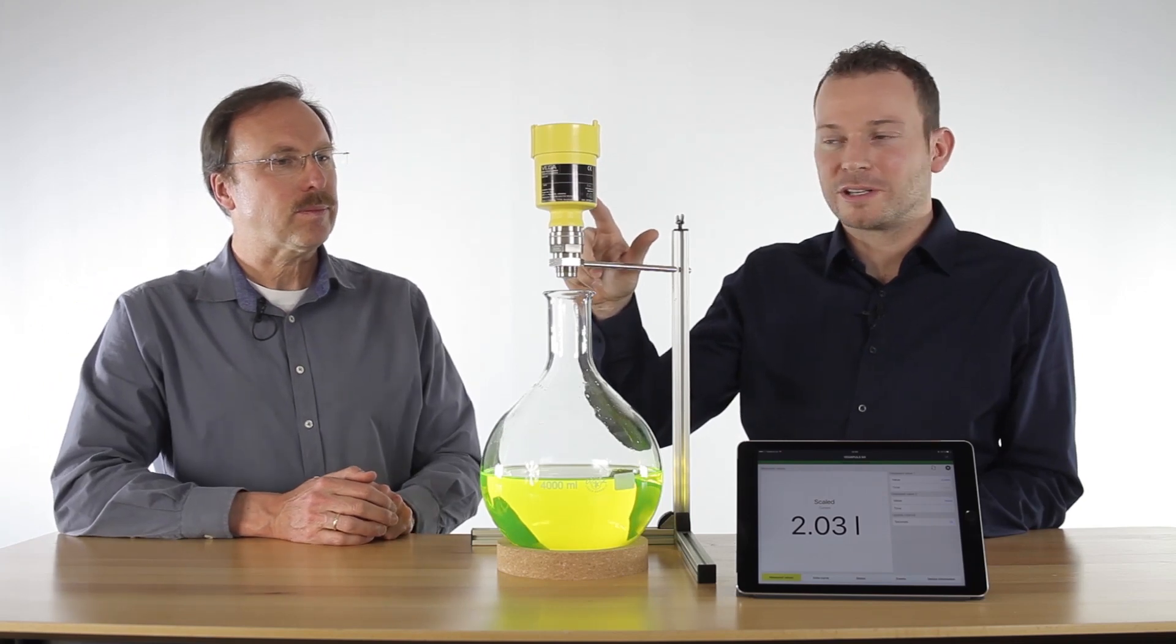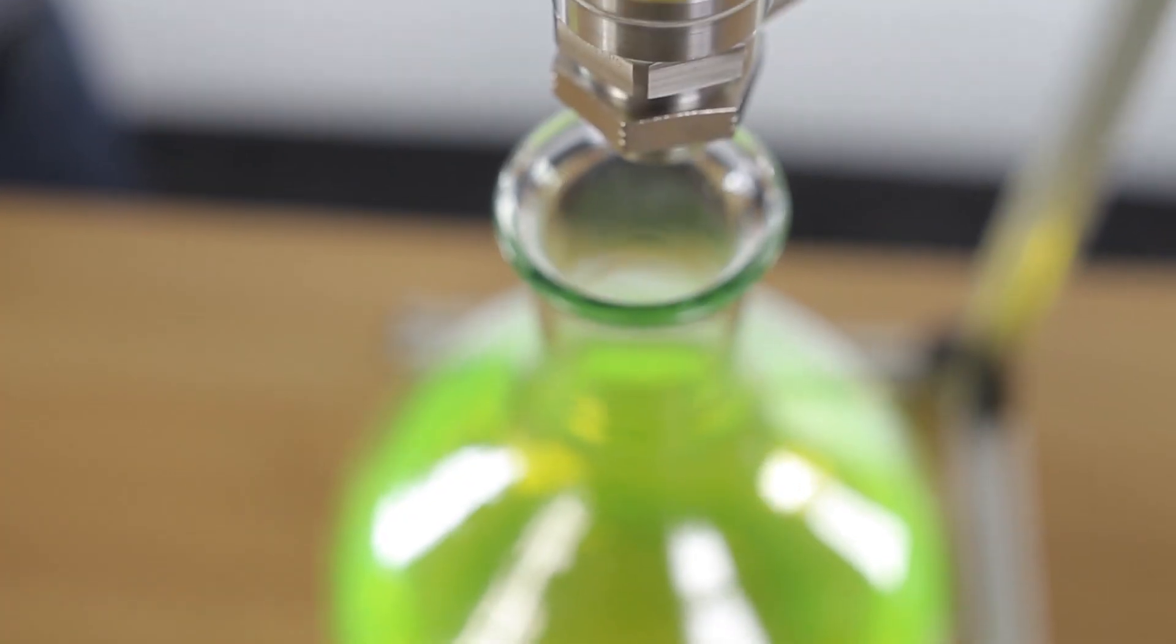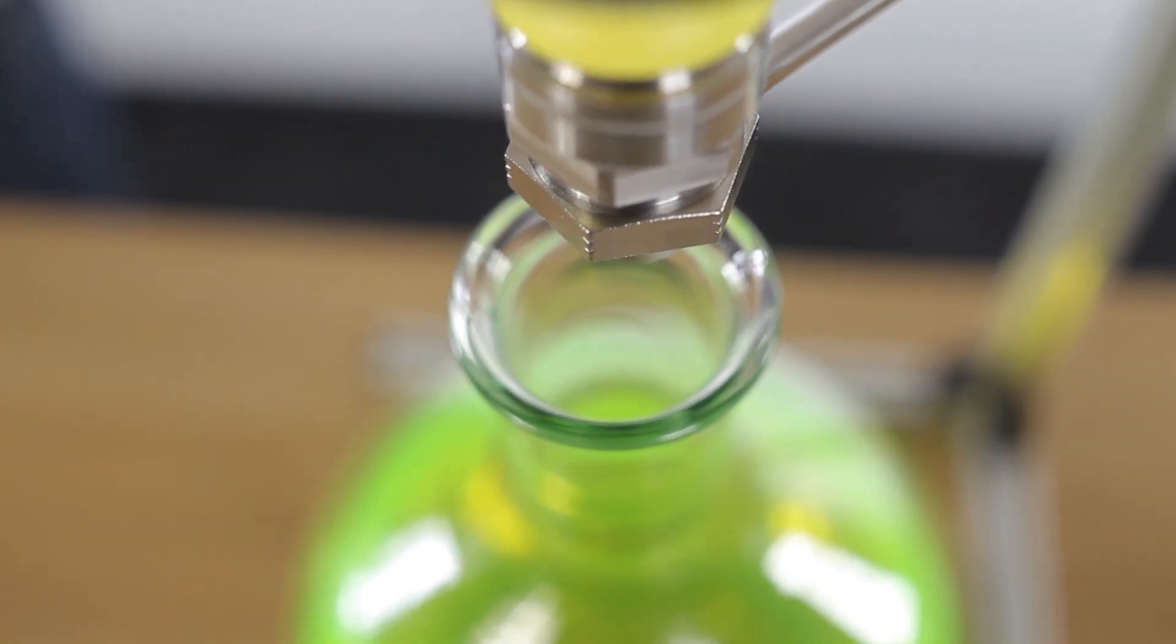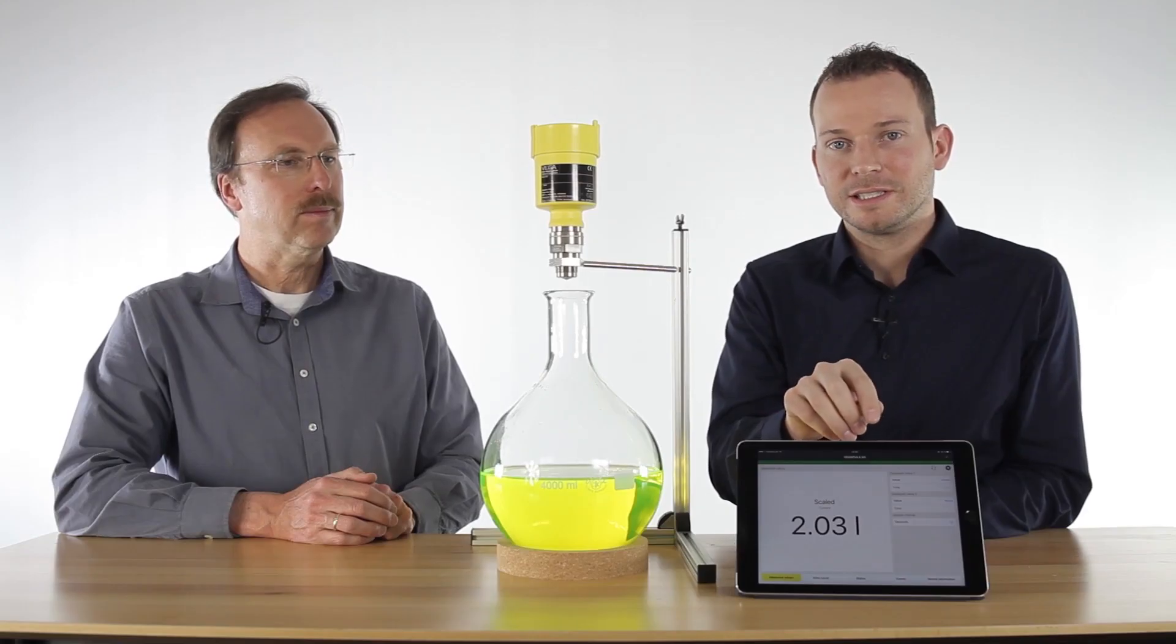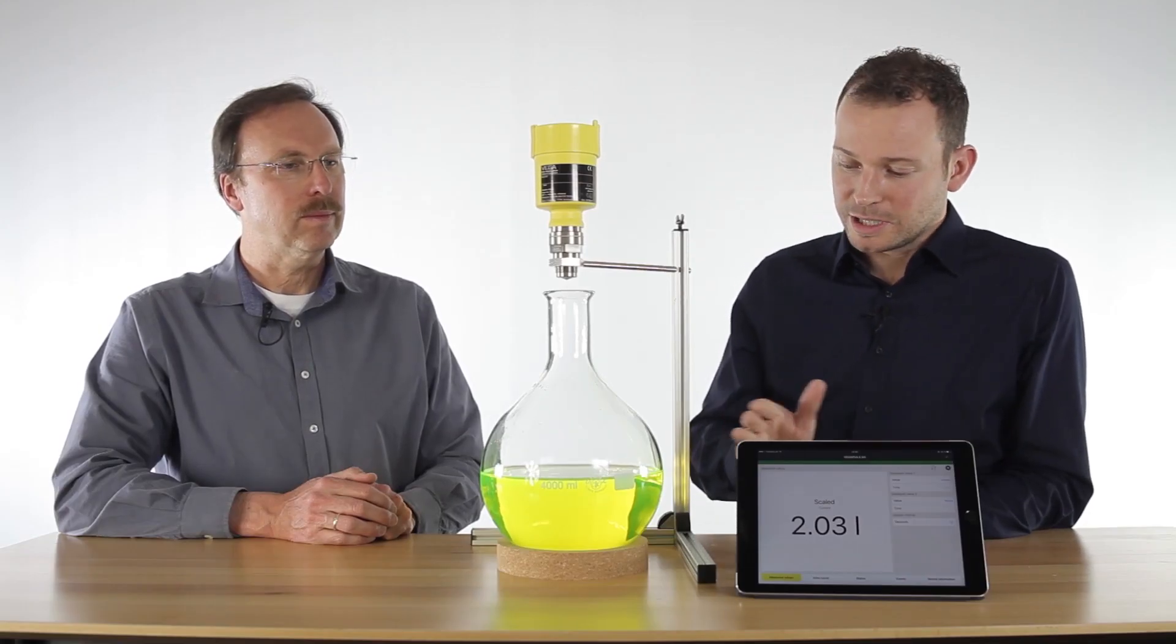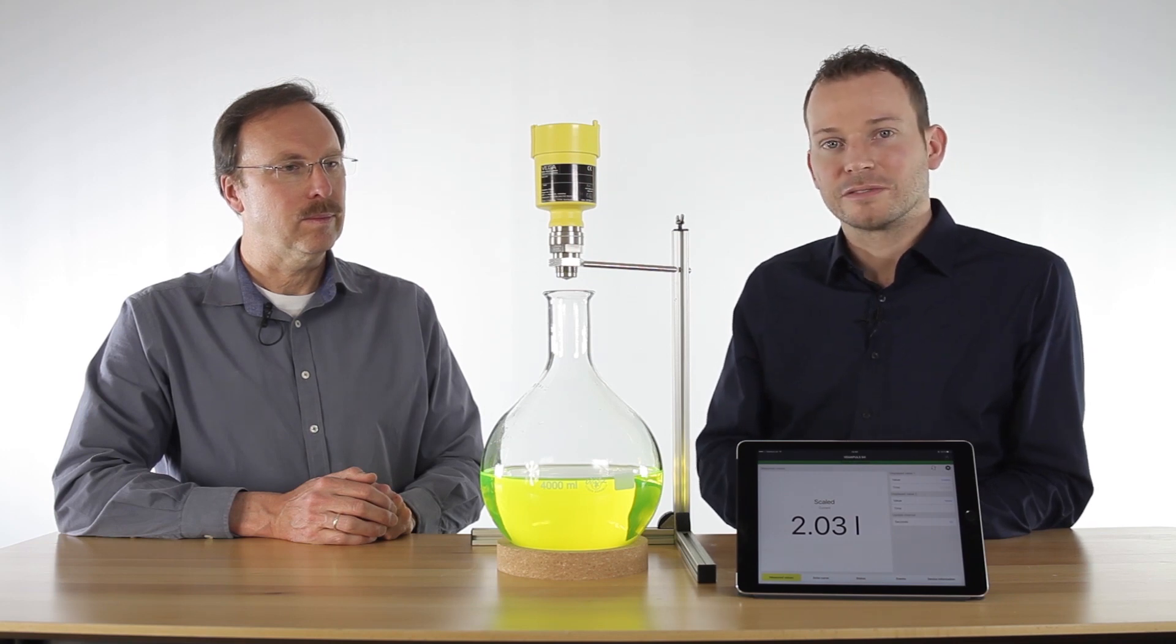The Vega Pulse 64 is mounted on top. It's a battery-powered instrument with a Bluetooth connection to this tablet, and on the tablet you can see the measurement value. At the moment we have about two liters inside of this tank.